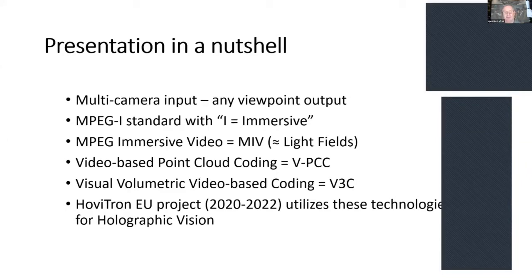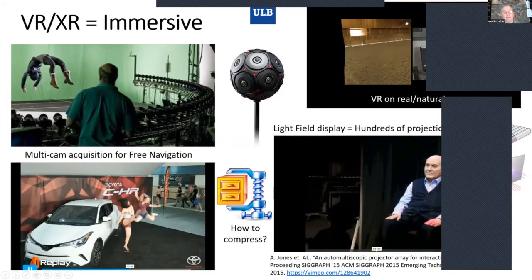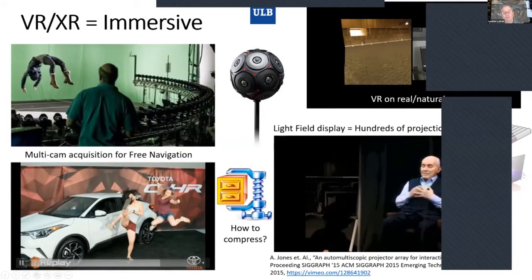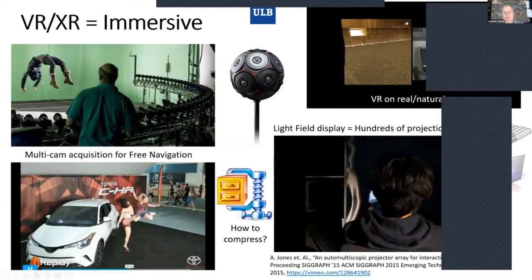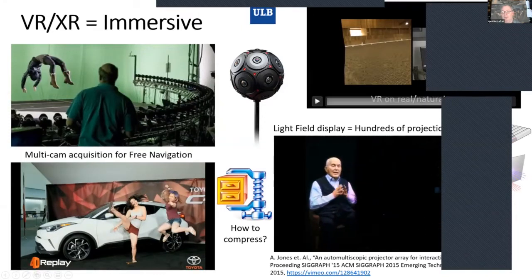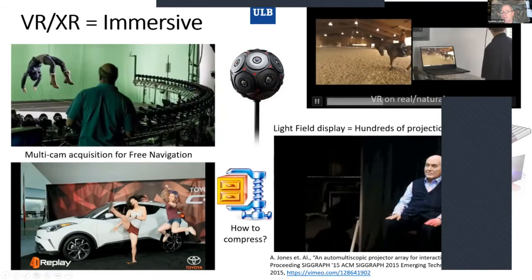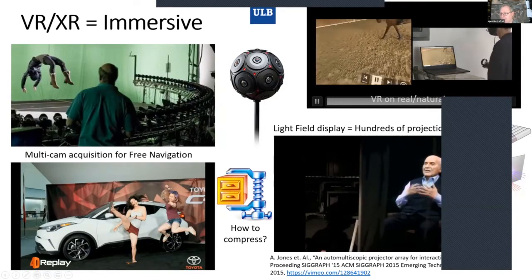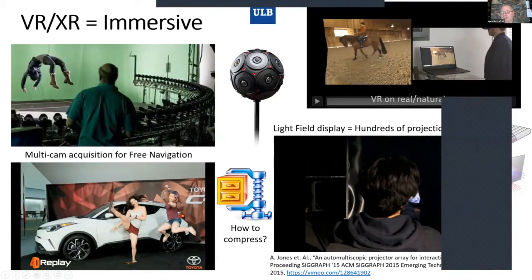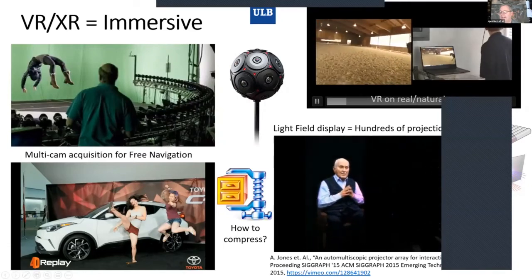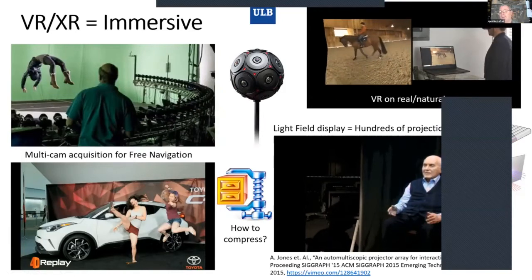First, what do we want to do? We want to have a scene surrounded by cameras and provide an immersive experience — by switching from one camera to another you can really float and have free navigation in the scene. You can also have a VR experience where a guy with a head-mounted device is looking at the scene. Very important here is that even though he's just turning his head, his body is also moving a little left and right, and that motion parallax should also be represented in the rendering he's experiencing in his head-mounted device.